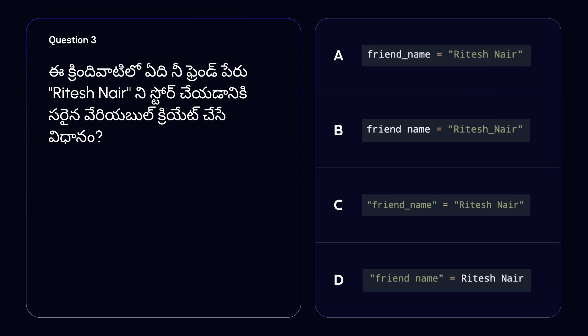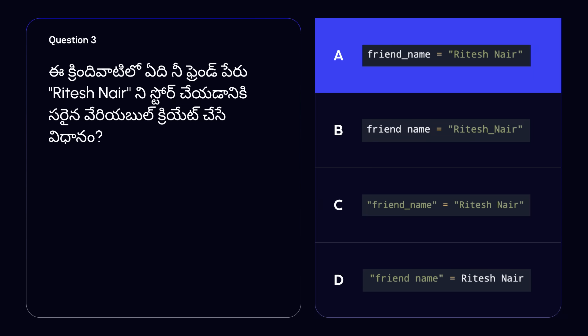One last question for today. Which of the following is the correct way to create a variable that will store the name of your friend, Ritesh Nayar? The correct answer is option A. Whenever we have two words in the name of a variable, we separate them with an underscore. When we store words in a variable, we put quotation marks around the value. We can always have spaces between what is stored in the variable, but we can never have spaces inside the name of a variable. Don't worry if you didn't understand everything today — it might seem like a lot at the start. As you watch more of these videos, all of these things will automatically become a lot clearer. That's all for today and I look forward to seeing you in the next video.